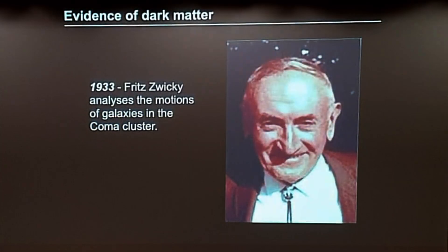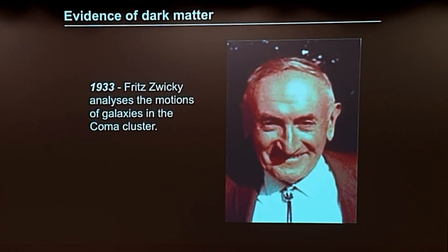It all started in 1933 with this fellow, Fritz Zwicky, a Swiss astronomer, a bit of a cantankerous character by all accounts. He referred to his colleagues as spherical blighters, that wasn't the word that he used. When asked why spherical, he said because they're blighters no matter which way you look at them. He was a very inspirational character for many, he made lots of discoveries, he discovered neutron stars and supernovae, he even made a prediction that galaxies will act like gravitational lenses.